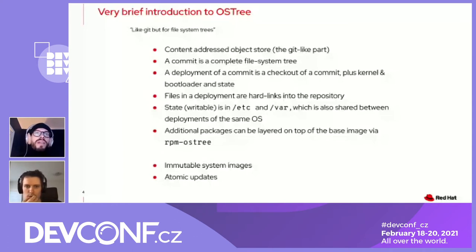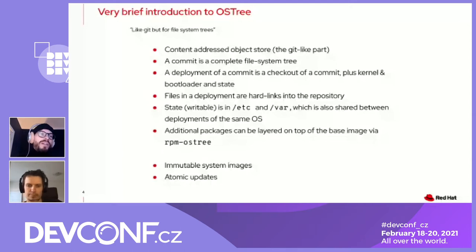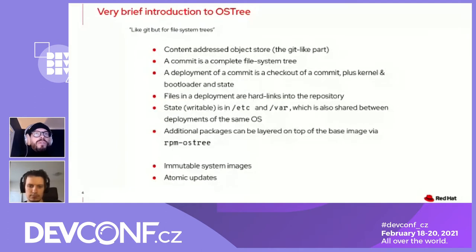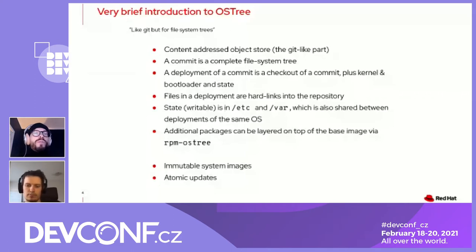This only makes sense if the file system is read-only, otherwise you could edit the files and corrupt your commit. So this whole thing basically assumes that you have an immutable system image that is self-contained. Very much as in Git, if two commits contain exactly the same file, you can share it via another hard link into the repository. Between deployments, what you share is the state in etc and var. If you switch from one commit to another, there will be a three-way merge between old state in etc, new state in etc, and the configuration changes you made yourself.